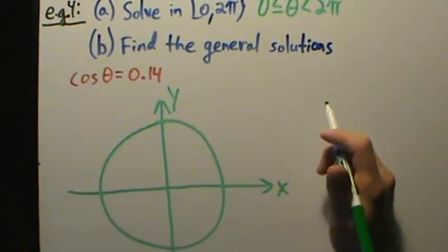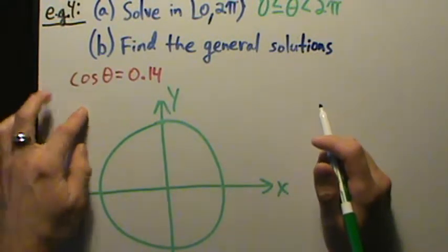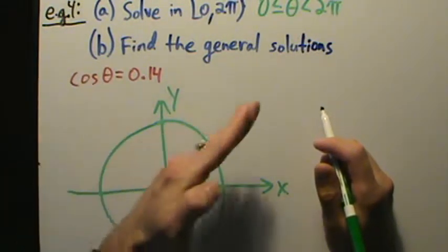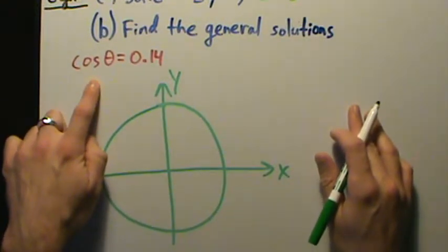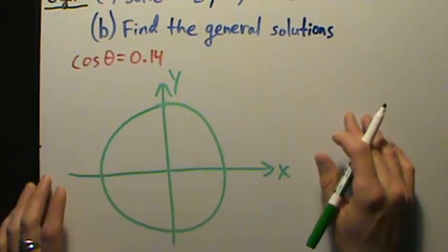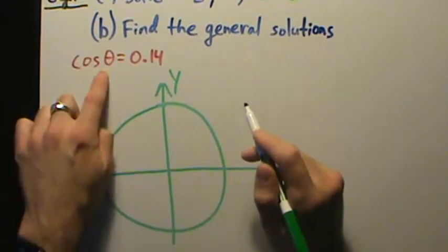Okay, so cosine of theta is positive in quadrant 1 and quadrant 4. Remember, cosine corresponds to the x coordinates of the point of intersection between the unit circle and the terminal side of this angle theta.